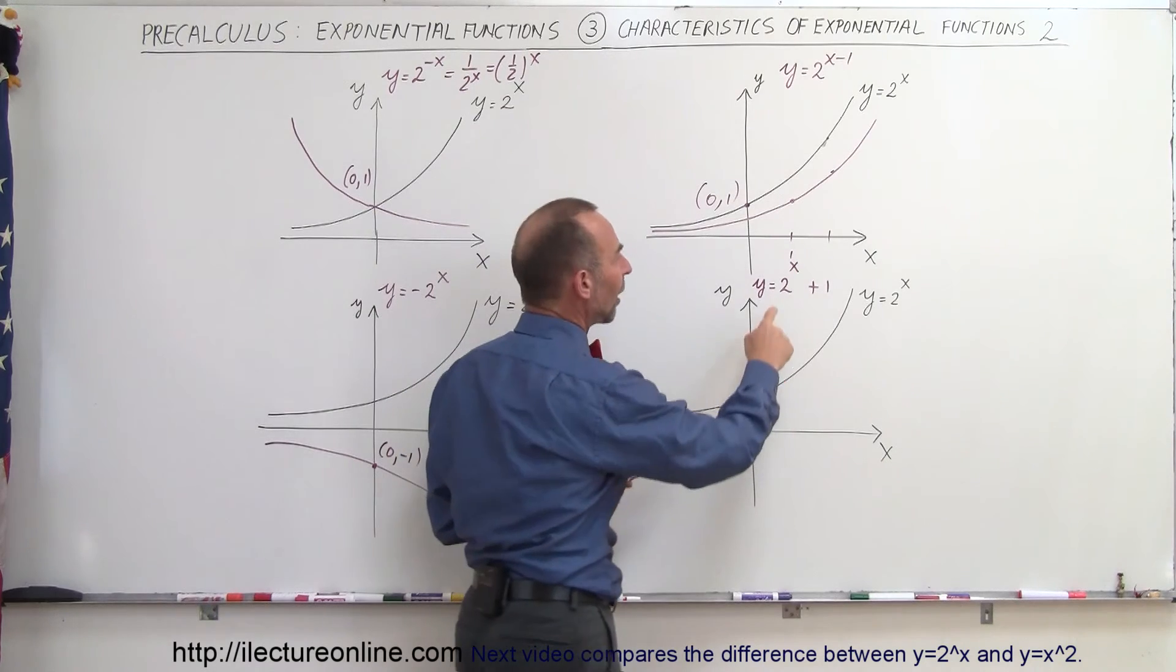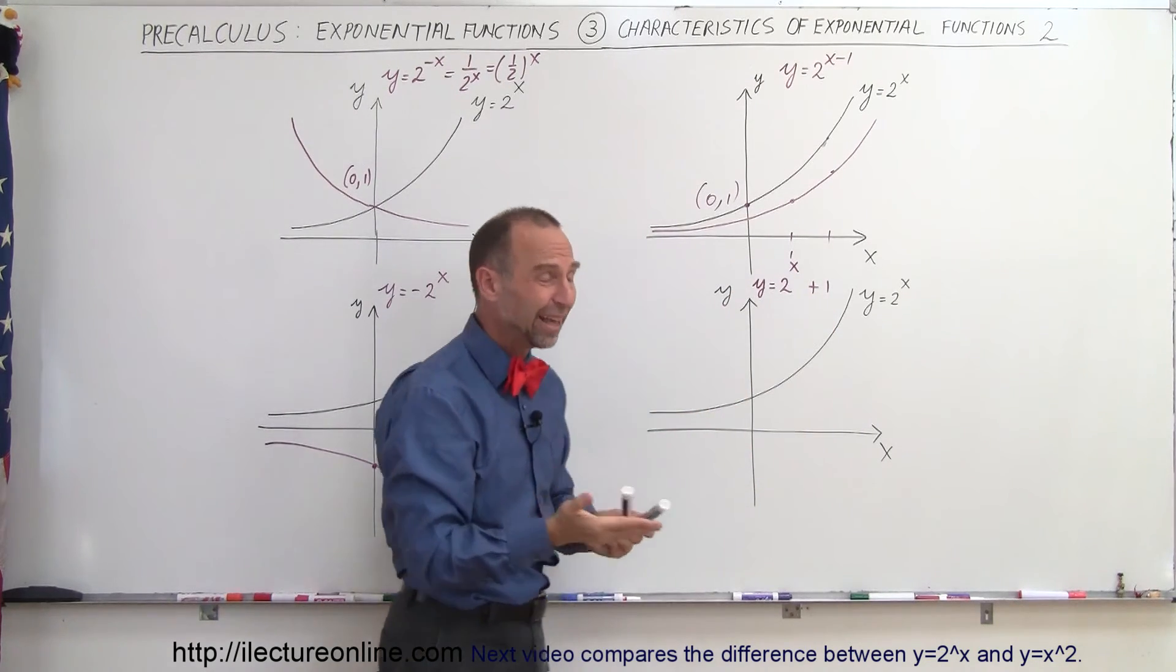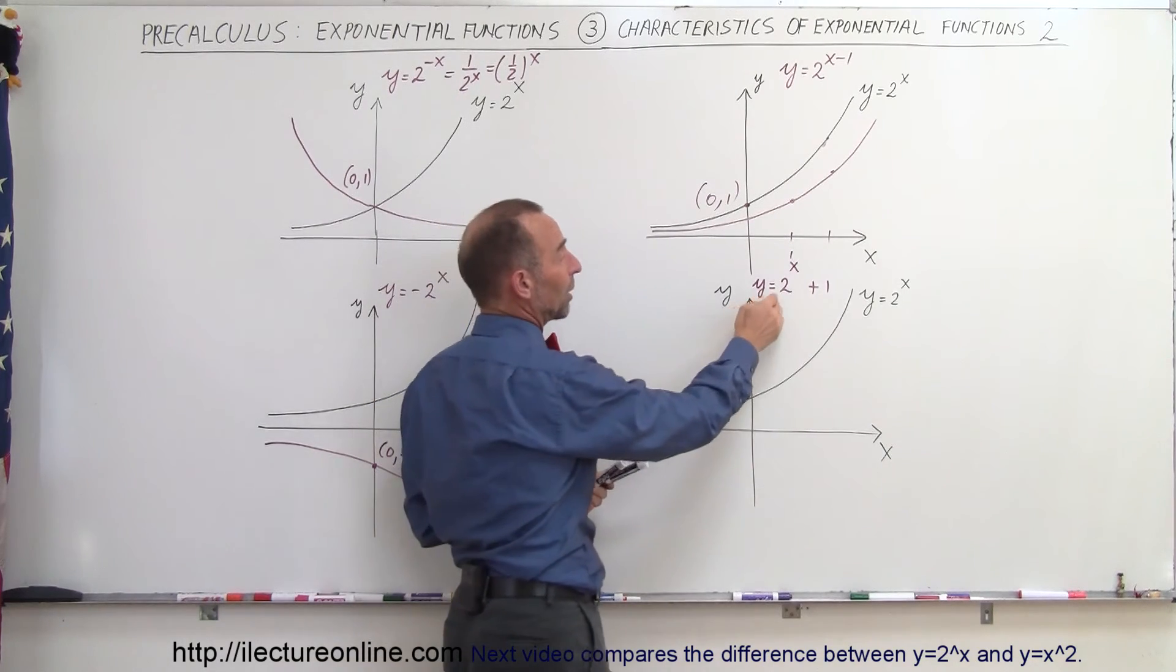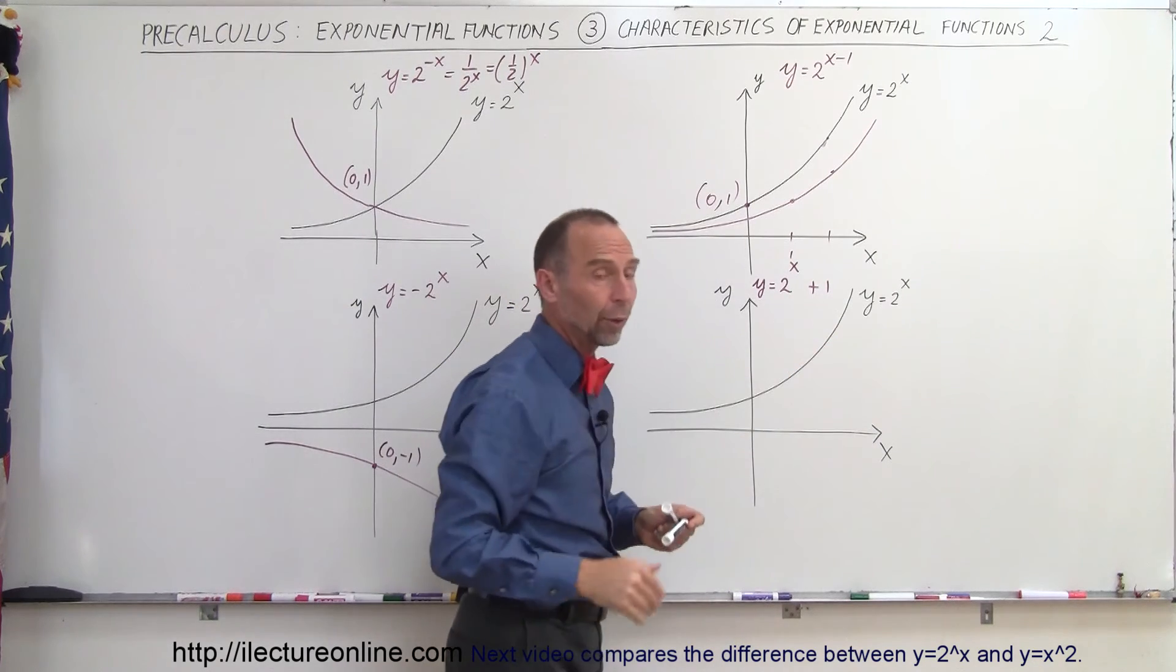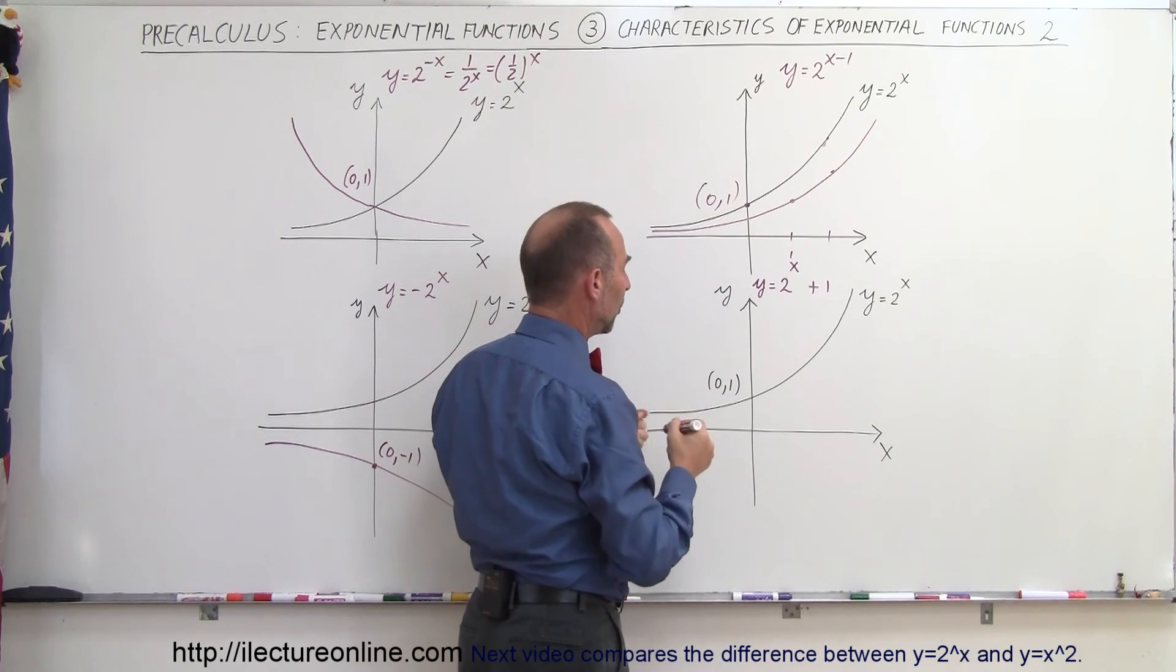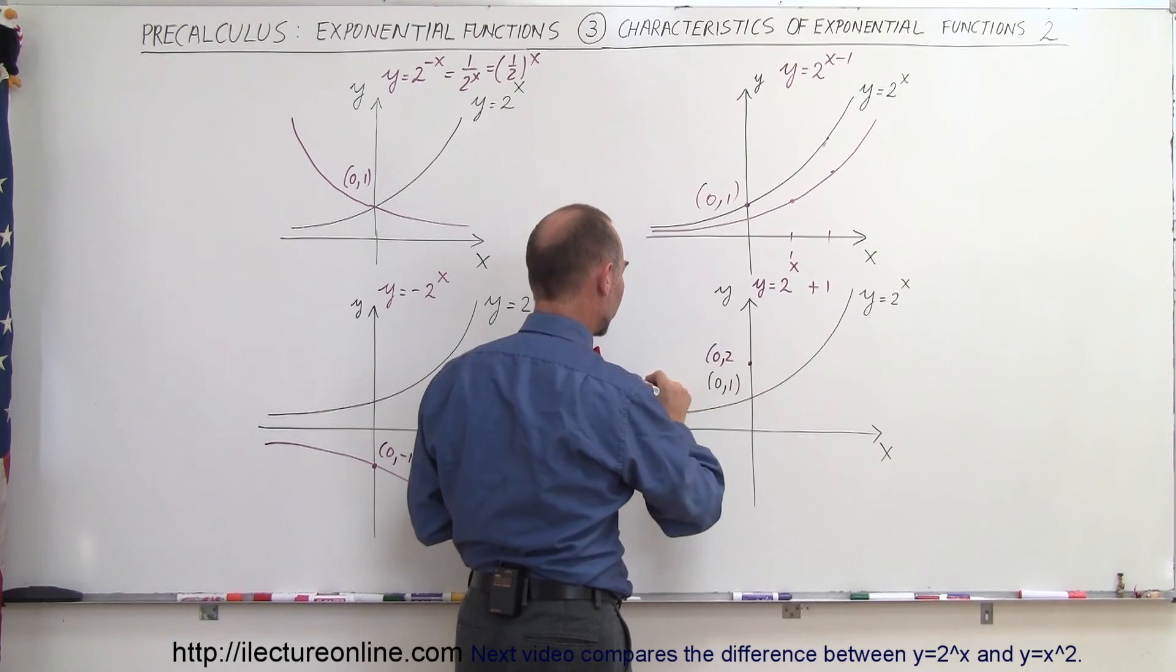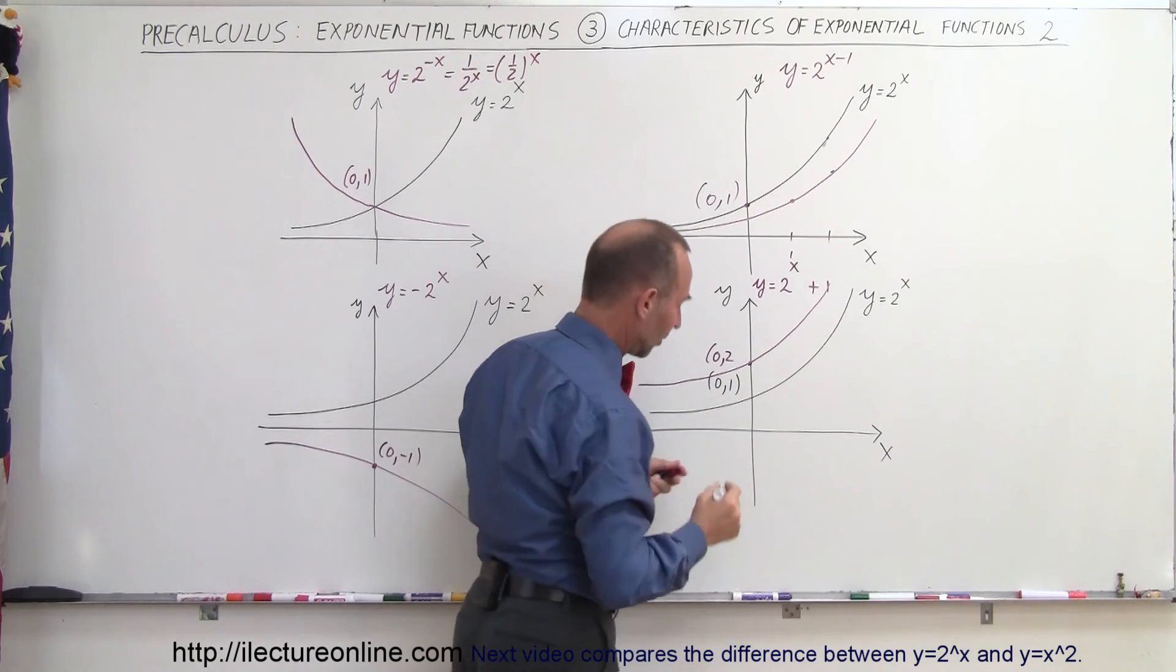And finally, if we have y equals 2 to the x power plus 1, where plus 1 is not the exponent, it simply raises the whole function up by one unit. If we say y equals 2 to the x minus 1, it would actually drop the whole function by one unit. Which means instead of going through the y-axis at 0, 1, it's now going to the y-axis at 0, 2. And so the function simply is raised up by one unit and looks like that.